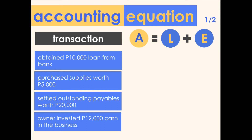Transaction one: obtained a 10,000 peso loan from the bank. Cash was received and the company also incurred a loan payable. Cash is an asset; loan payable is a liability. So the impact of this transaction is a 10,000 peso increase in assets, a 10,000 peso increase in liabilities, and no effect on equity. Both sides of the equation are equal.